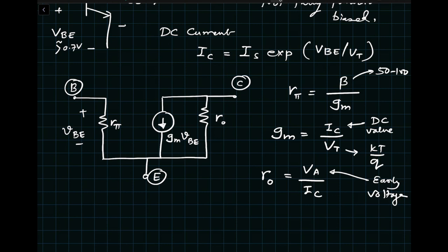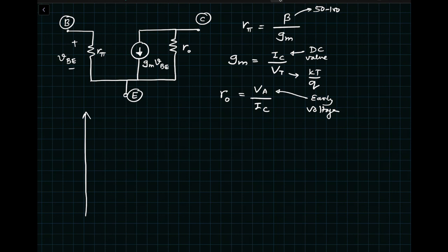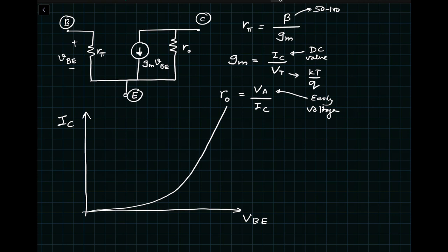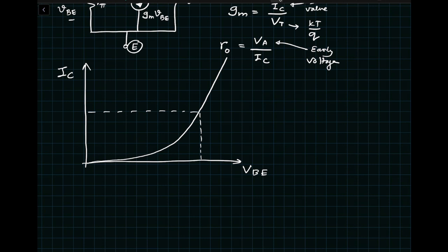Now let's plot the large signal characteristics of the bipolar transistor. On the y-axis is IC and on the x-axis is VBE. Since the base-to-emitter junction diode is forward biased, we see an exponential curve. If we bias the diode at a certain operating point and apply a small signal AC voltage VBE around that point, then the slope at that point is the transconductance Gm.